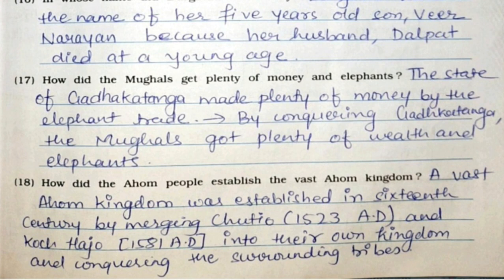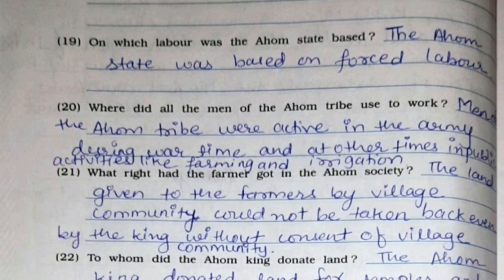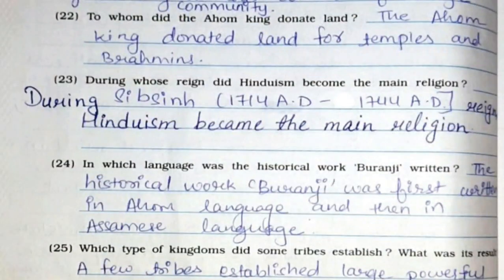Eighteenth: How did the Ahom people establish the vast Ahom kingdom? The vast Ahom kingdom was established in the 16th century by merging Chutio in 1523 AD and Koch Hajo in 1581 AD into their own kingdom and conquering the surrounding tribes. Nineteenth: On which labor was the Ahom state based? The Ahom state was based on forced labor. Twentieth: Where did all the men of the Ahom tribe used to work? Men of the Ahom tribe were active in the army during wartime, and at other times in public activities like farming and irrigation. Twenty-first: What right had the farmer got in Ahom society? The land given to farmers by the village community could not be taken back even by the king without the consent of the village community.